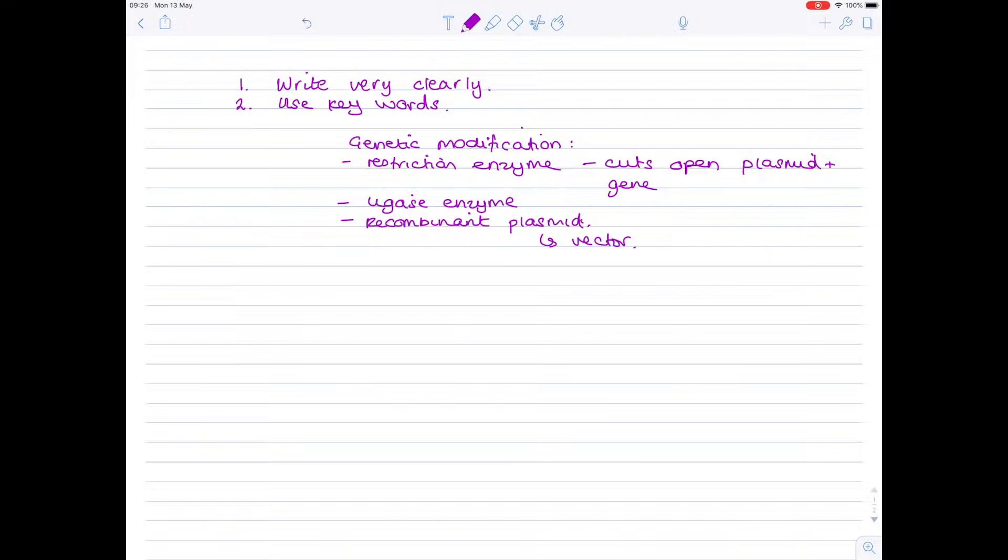My third point is knowing the difference between describe and explain. People get this wrong all day long. Describe is say what you see. So if it's a graph you need to say that as one variable increases the other one increases or decreases, obviously it will depend on what the data is. Explain is saying why, so this is where you use science to back up your answer.